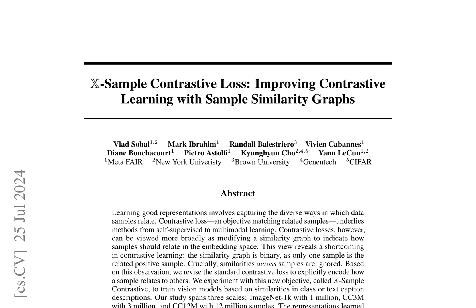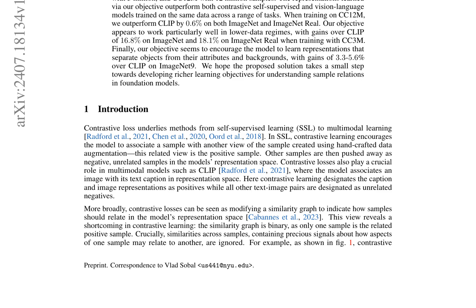The proposed X-Sample Contrastive objective aims to capture these neglected similarities by revising the standard contrastive loss. They experiment with this new objective on three datasets — ImageNet 1K, CC3M, and CC12M — and demonstrate that learned representations outperform contrastive self-supervised and vision-language models on a range of tasks. The objective performs particularly well in lower data regimes, achieving significant gains over CLIP when training with CC3M, and learned representations better separate objects from their attributes and backgrounds, improving performance on ImageNet 9.